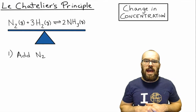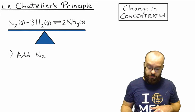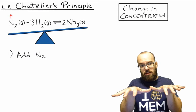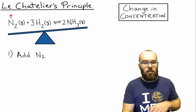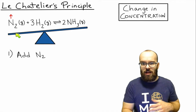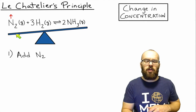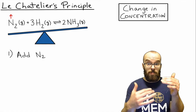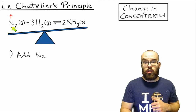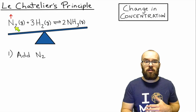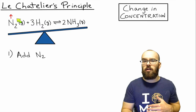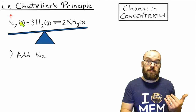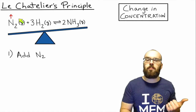Let's say we add nitrogen gas. The nitrogen concentration increases, which throws off the balance of the seesaw. According to Le Chatelier's principle, the reaction will shift to counteract this — it needs to shift to the right, toward the products. In the country metaphor, this is like adding people to Country A, so people move to Country B.